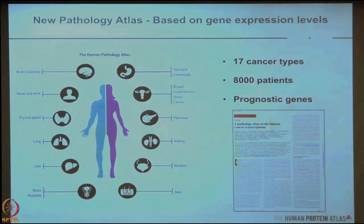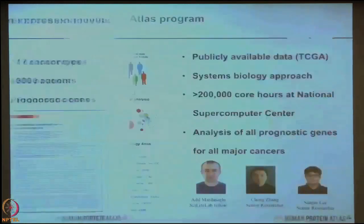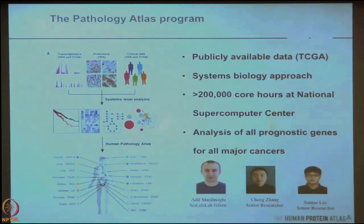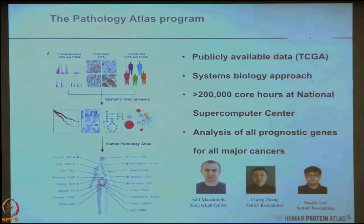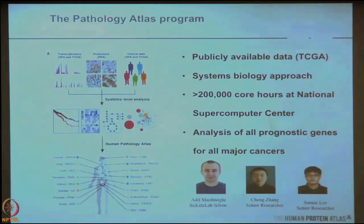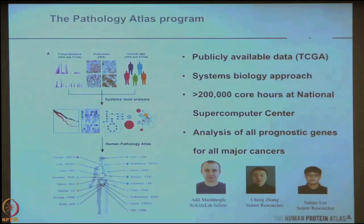Our question was: which genes correlate to patient survival for these 17 different cancer types? An enormous amount of bioinformatics work was done over about five to six months, headed by Adil, a great computer scientist, and his group of bioinformaticians. They spent a lot of time at the National Supercomputer Center. All the data was already available but wasn't put together, so we massaged it and I will show you a few summary slides from that effort.